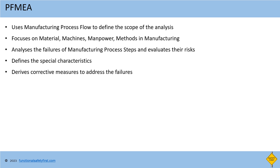PFMEA defines the special characteristics — a notation used to provide special attention for the function or product during the manufacturing process. PFMEA also derives corrective measures to address the failures. For example, wrong selection of a part can result in wrong population of components at PCB assembly; a barcode scanner will be added as a measure to select the correct part. Error proofing methods — also called poka-yoke methods — such as SIM card or USB connector slots are good examples, as we cannot insert them wrongly. Similar measures will be added to prevent wrong insertion of a PCB board into the manufacturing line.